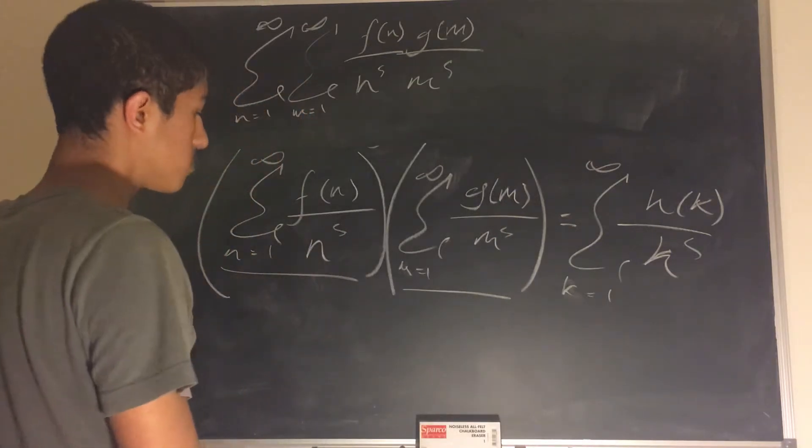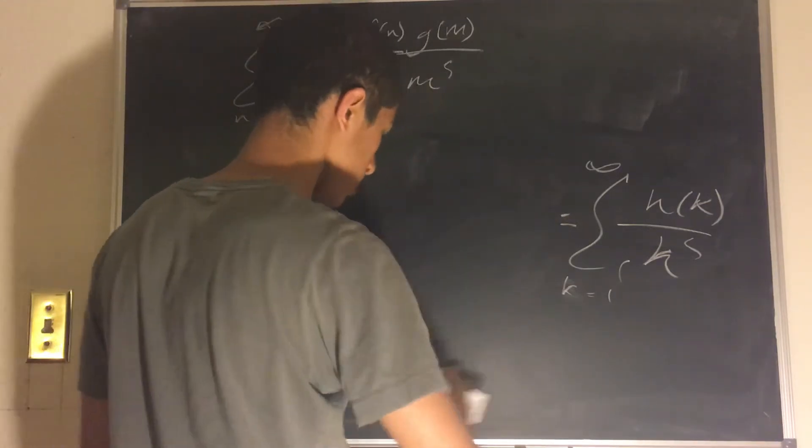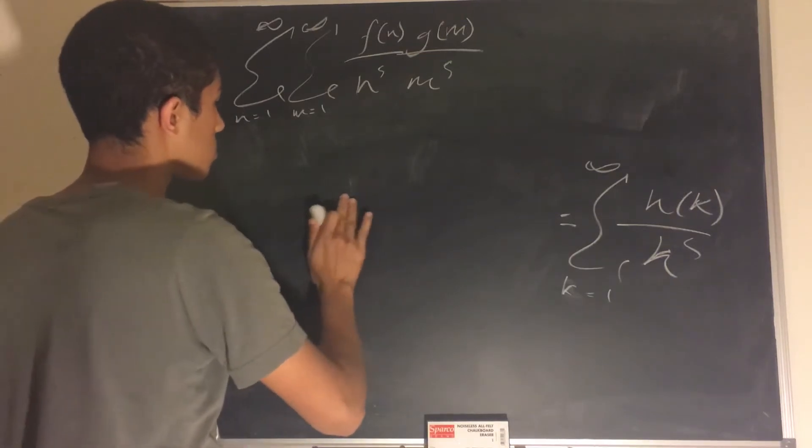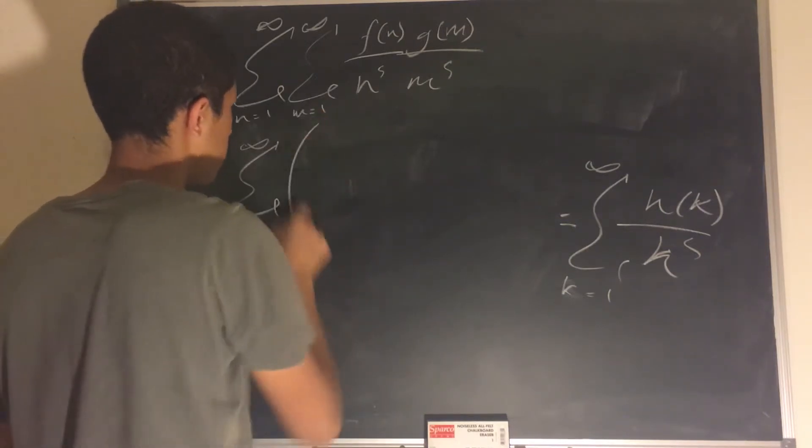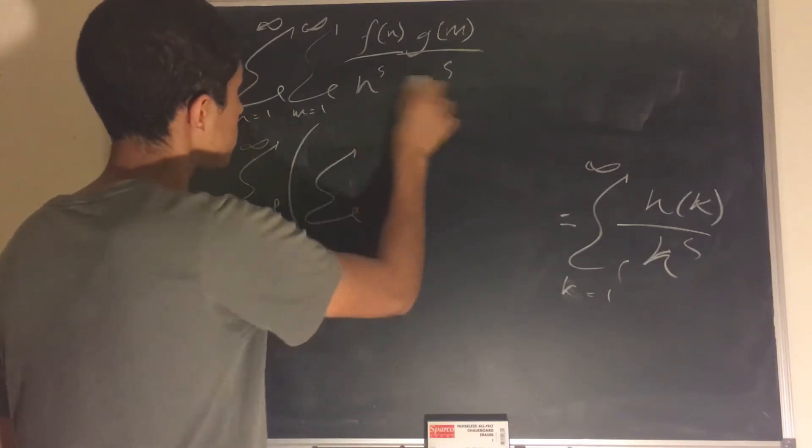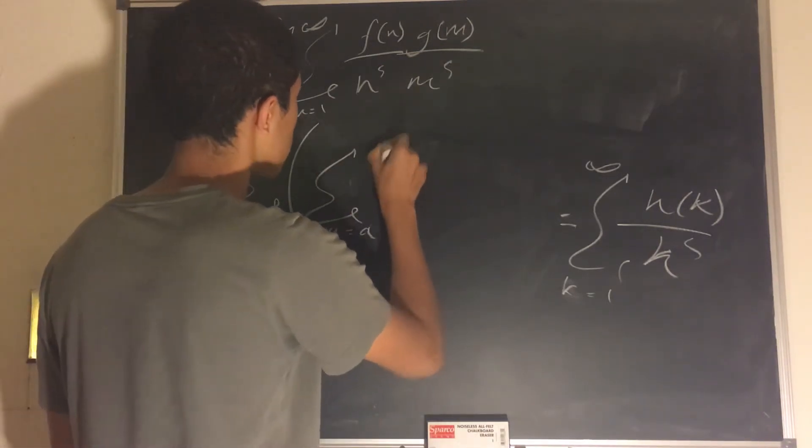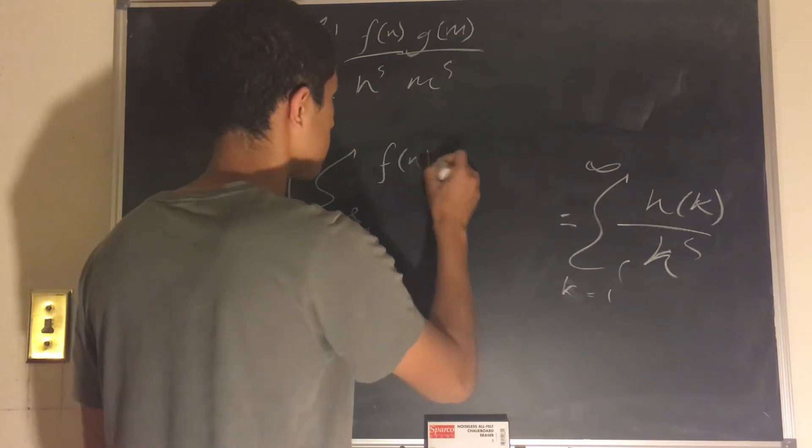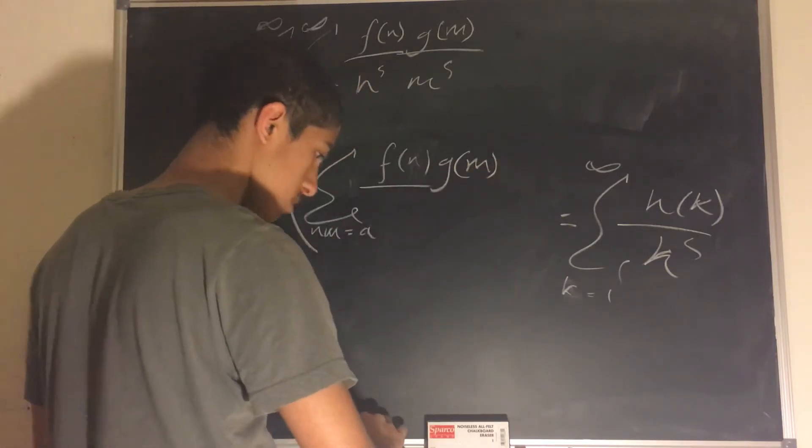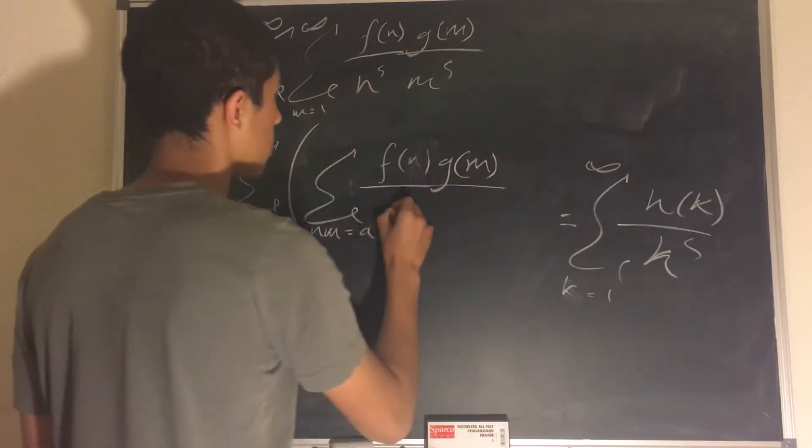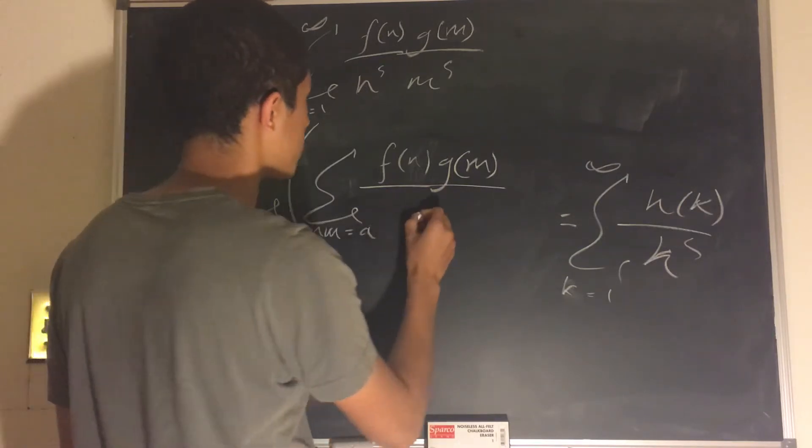And now what we can do is we can rewrite this double sum using different indices. And we can say this is equal to the sum over a equals 1 to infinity of sigma nm is equal to a of f of n, g of m over, and then n to the s, m to the s, since nm is equal to a, we'll just divide this by a to the s.